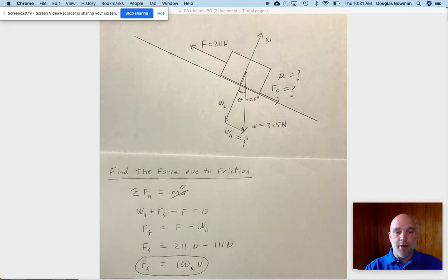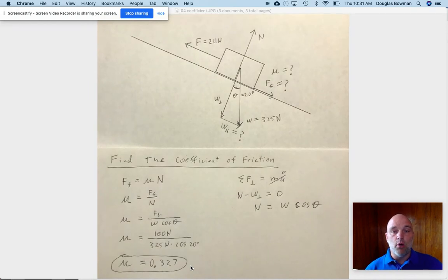The last step is finding the coefficient of friction. In order to look at the coefficient of friction, we need to remember the definition. Force due to friction is mu times N. And so we quickly rearrange that for the coefficient. It's the force due to friction divided by the normal force. We found the force due to friction in the prior part. It's 100 Newtons.